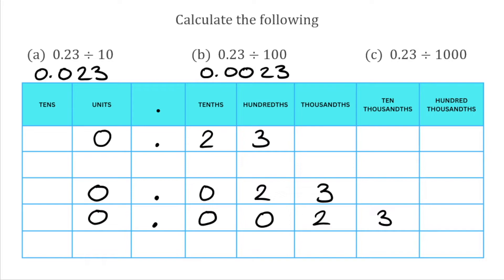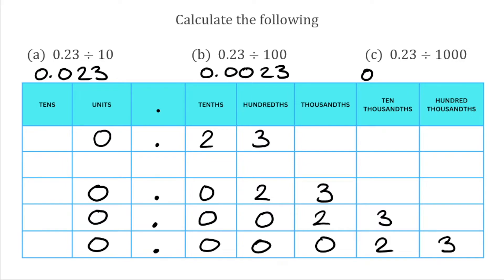For the final part, we've got 0.23 divided by 1,000. There are three zeros in 1,000, so we move all the digits three places to the right. The 3 in the hundredths is now in the hundred-thousandths, the 2 in the tenths is now in the ten-thousandths, and the zero from the units is now in the thousandths. We don't have any hundredths or tenths, so we put zeros there, and a zero in the units column. So 0.23 divided by 1,000 is 0.00023.